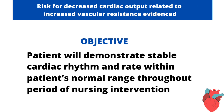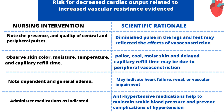The objective for the third nursing diagnosis is that the patient will demonstrate stable cardiac rhythm and rate within the patient's normal range throughout the period of hospitalization. The first intervention is to note the presence and quality of central and peripheral pulses. The rationale is that when the pulse in the legs and feet diminishes, this may be an effect of vasoconstriction.